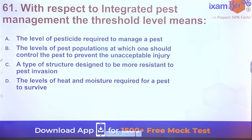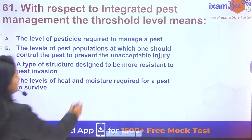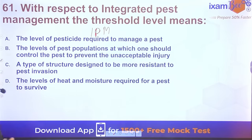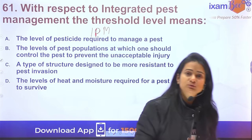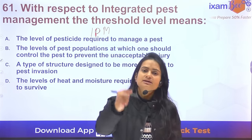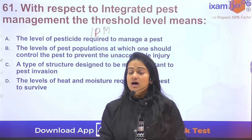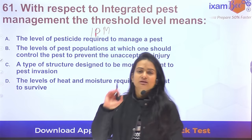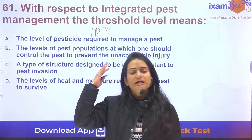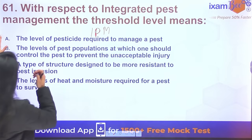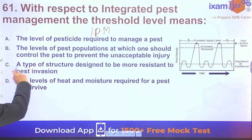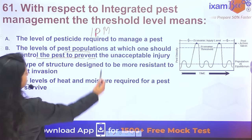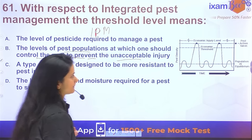Question 61: With respect to Integrated Pest Management (IPM), the threshold level — also called Economic Threshold Level (ETL) — is the level of pest population at which one should start spraying insecticide. If not controlled at this level, the crop will suffer injury to an extent that is not economically viable.